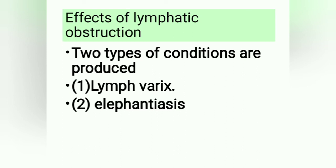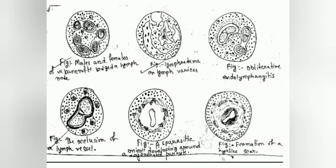Effects of lymphatic obstruction produce two types of conditions: first is lymph varices, and second is elephantiasis. Please take a screenshot of this picture. The figures shown are: (1) males and females of Wuchereria bancrofti in a lymph node; (2) lymphoedema or lymph varices; (3) obliterative endolymphangitis; (4) occlusion of a lymph vessel; (5) a parasitic granuloma developing around a degenerated parasite; (6) formation of a hyaline scar.